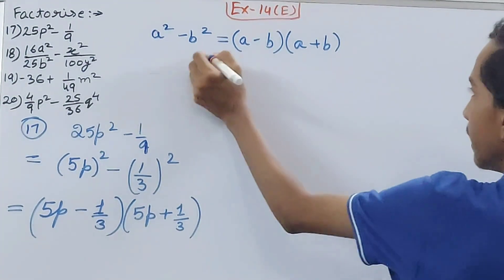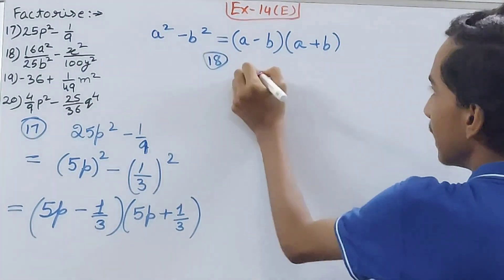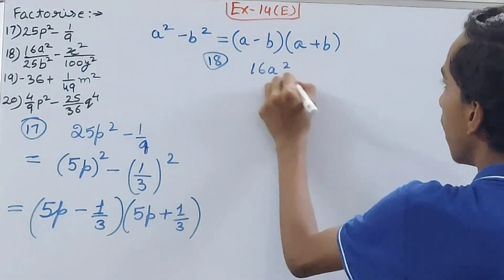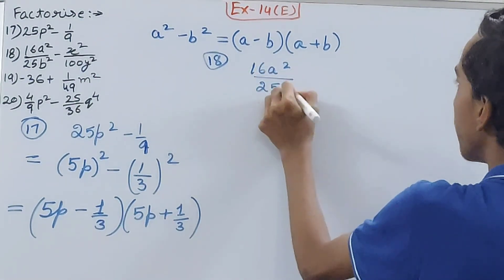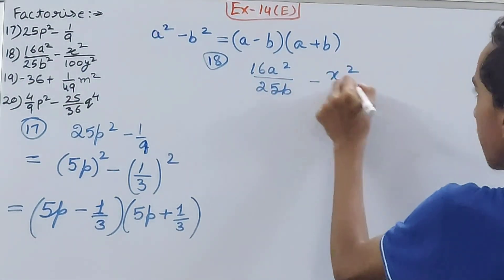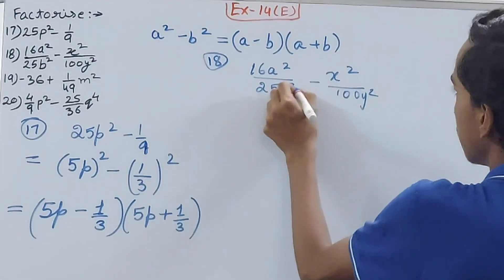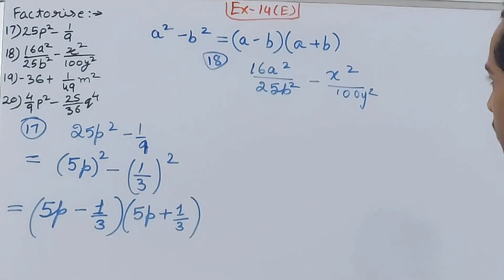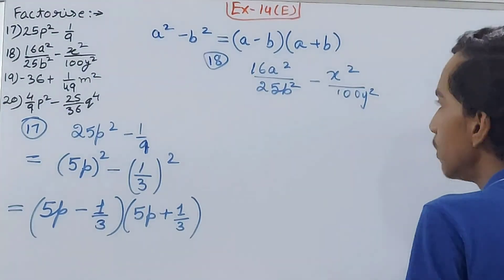In the 18th question, you have 16a²/25b² minus x²/100. Now see, very clearly, first term if you see, you can write the first term as the square of (4a/5b).